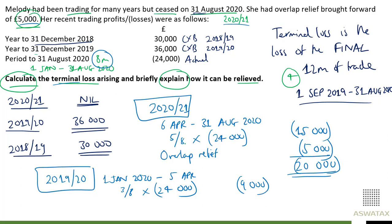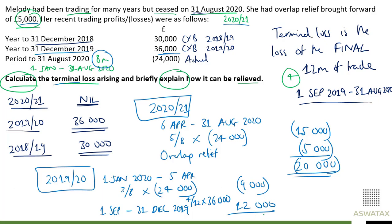The remaining four months come from the year to 31st December 2019 — the £36,000 profit. That would be 1st September to 31st December 2019, so four-twelfths of £36,000 gives us a profit of £12,000. Because this is a profit, there is no further loss — no loss for this period.